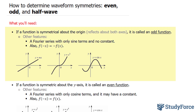If a function is symmetrical about the origin — that is, it reflects about both axes — it is called an odd function. Other features include a Fourier series with only sine terms and no constant. Also, if you substitute negative x into your function, you should end up with the negative version of your function.